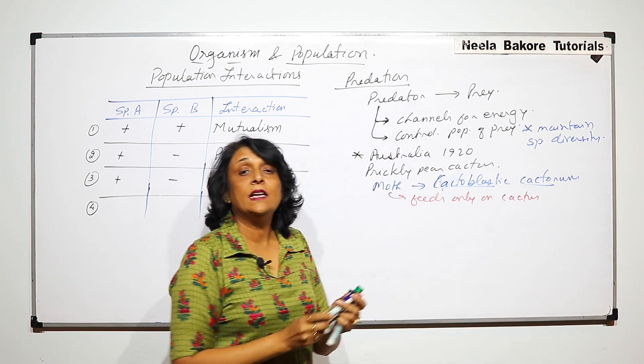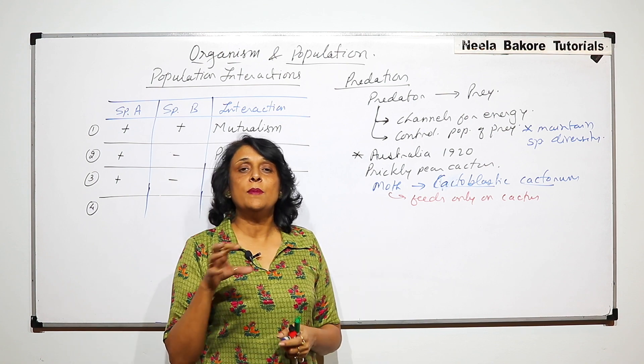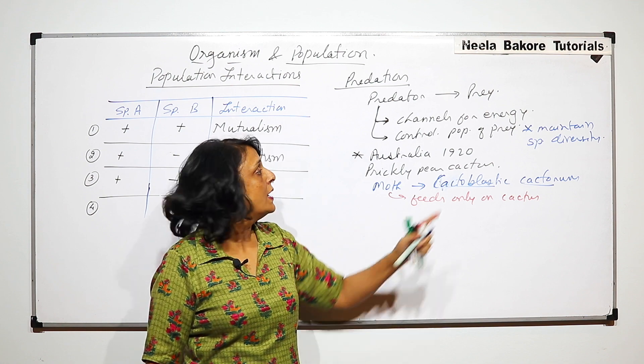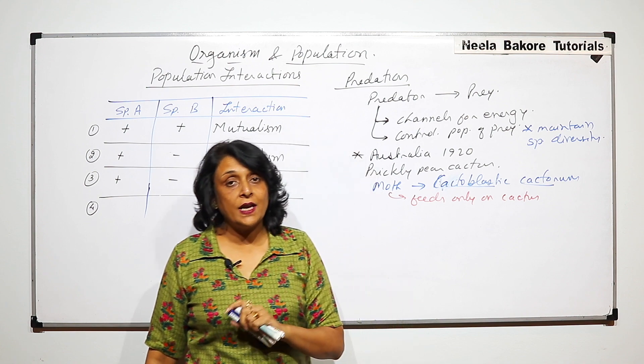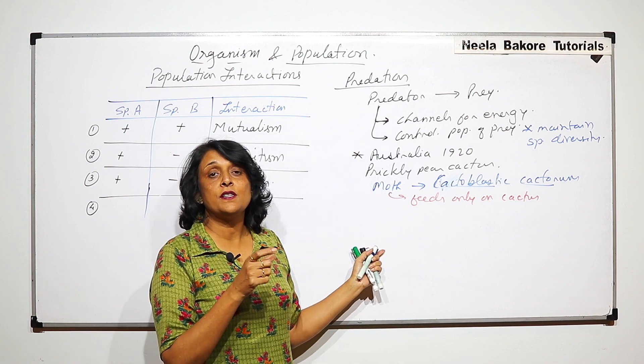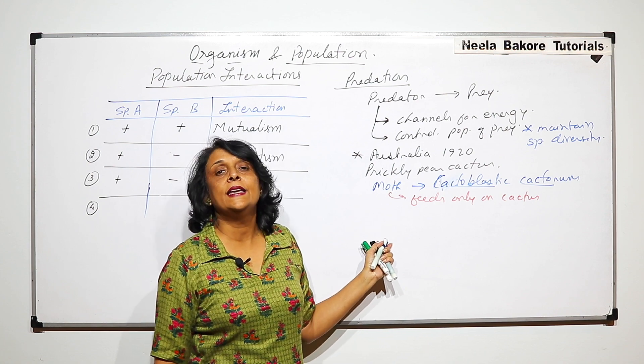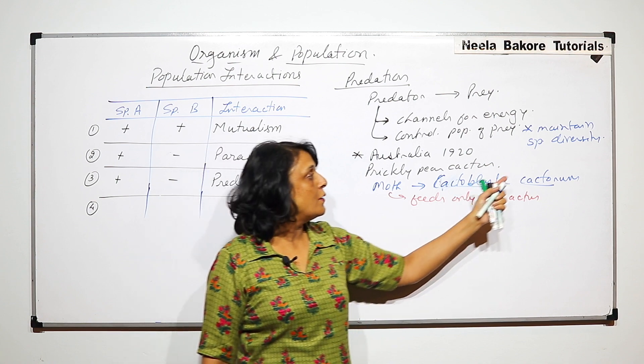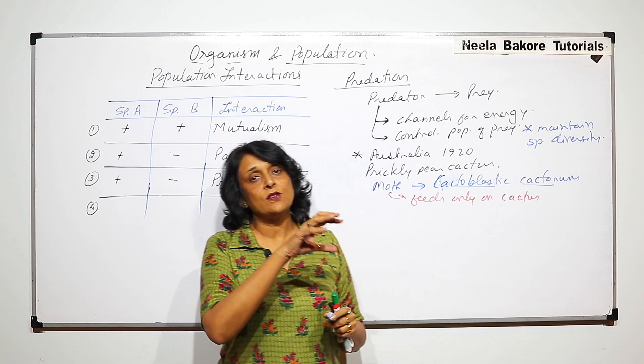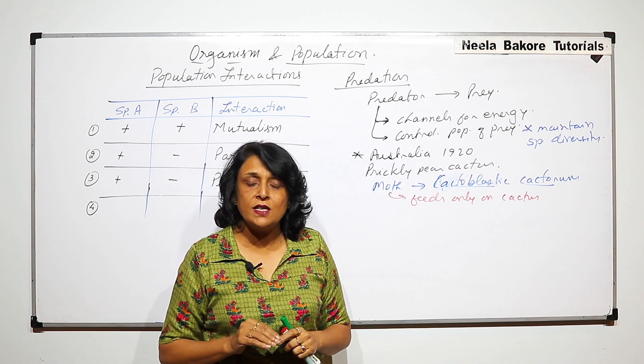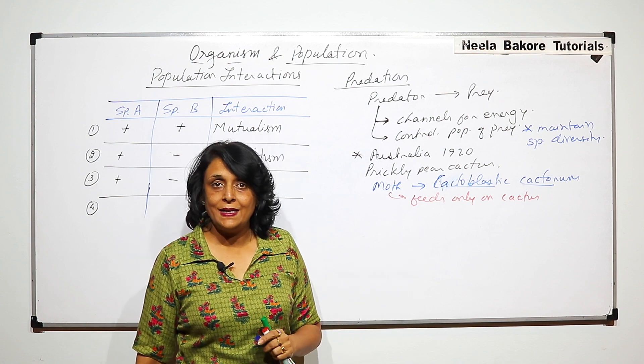In nature there is food web, and a predator would be consuming different types of prey. So the numbers of all the prey populations are kept under control, and at the same time species diversity is also maintained. When we talk of food chain and food web, this is the main difference. If it is a food chain and one particular prey is removed—like we took the example of goats—the entire ecosystem is going to get disturbed. But in a food web, various types of prey are available for this predator, and it is going to eat all those different types of species. So every species population will be checked, plus that diversity would be maintained.